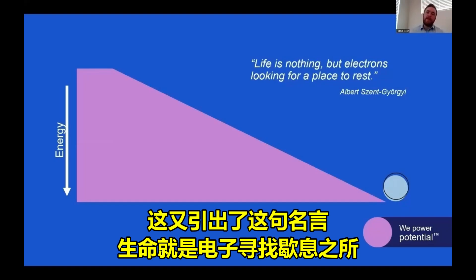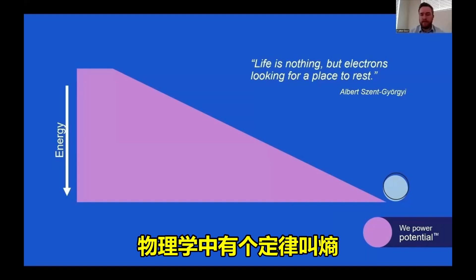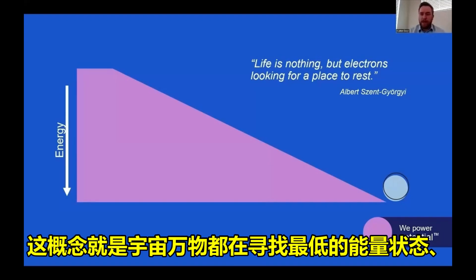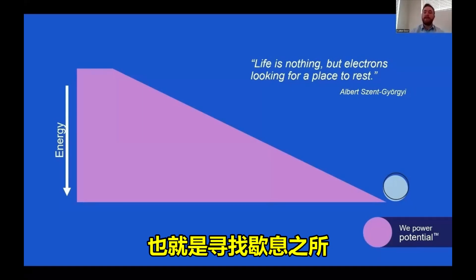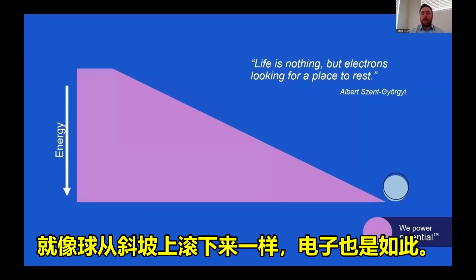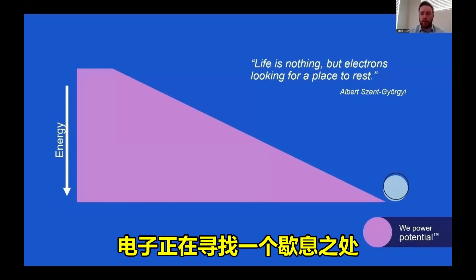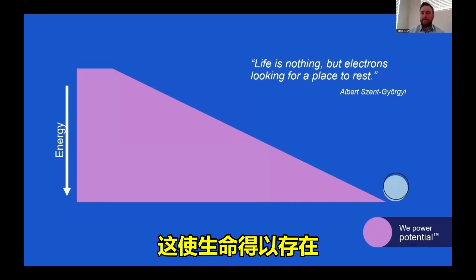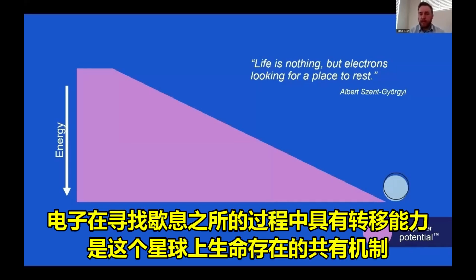This brings back the concept looking for a place to rest. There is a law in physics called entropy. And it's the concept that everything in this universe is looking for the lowest energy level, looking for a place to rest. And much like the ball rolling down the hill, electrons are very much the same. Electrons are looking for a place to rest. And this is what makes life possible. Everything on this planet is alive today because electrons have an ability to transfer while looking for a place to rest.